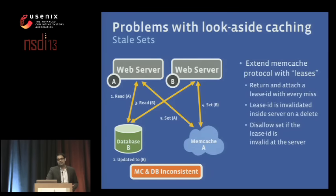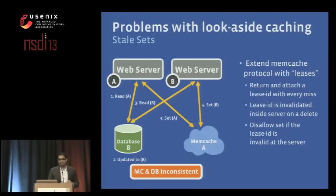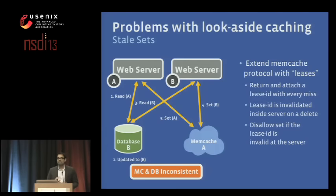So we extended the memcache protocol with what we call leases. With every miss in the cache, we attach a 64-bit lease ID. The lease ID is invalidated at the server after a delete. On the set path, we check the lease ID — has the value changed? If not, allow the set; otherwise we throw the set away. This is very similar to how load-link/conditional-store operates for those familiar with processor architectures.